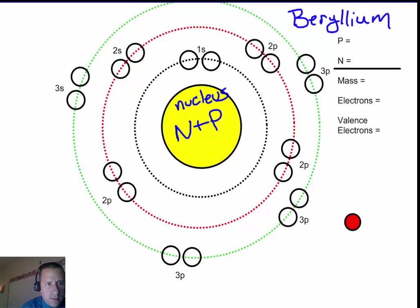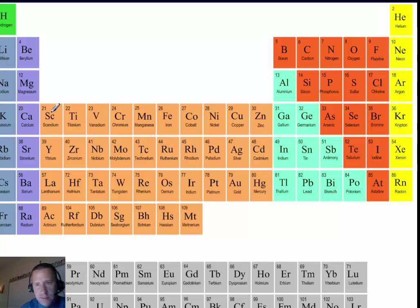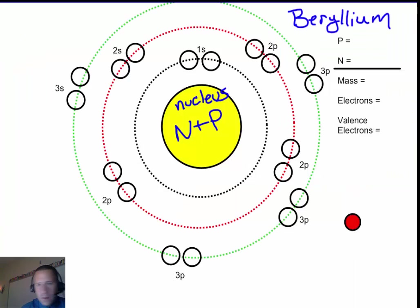Well, let's check out what a periodic table tells us about beryllium. Beryllium is right here. It has an atomic number of four. So we know that it has four protons. If it has four protons, we can also assume that it's neutral, know that it will have four electrons.